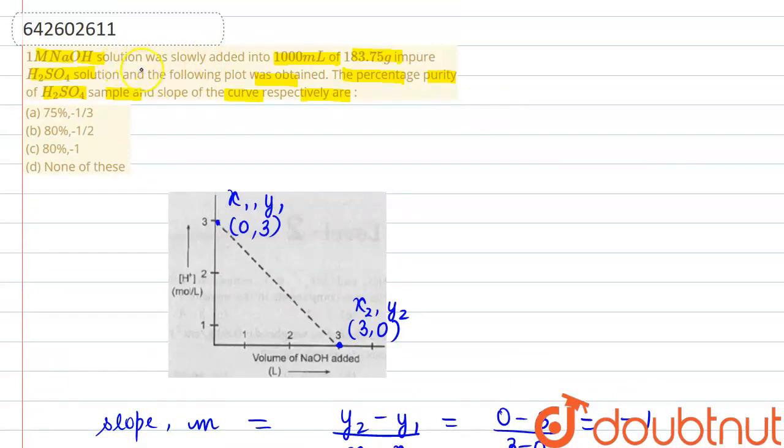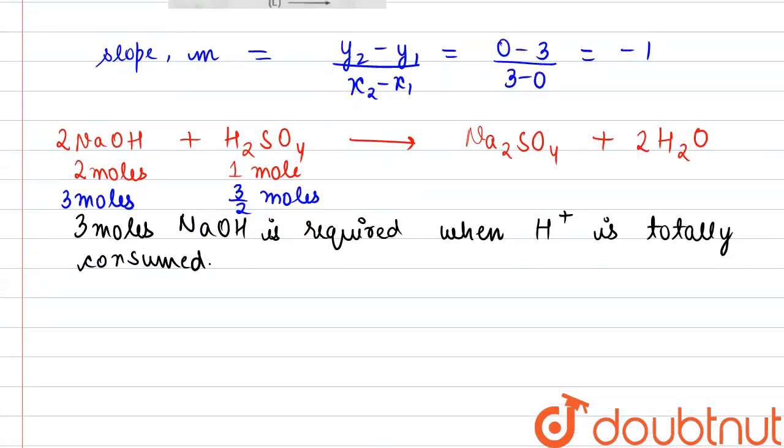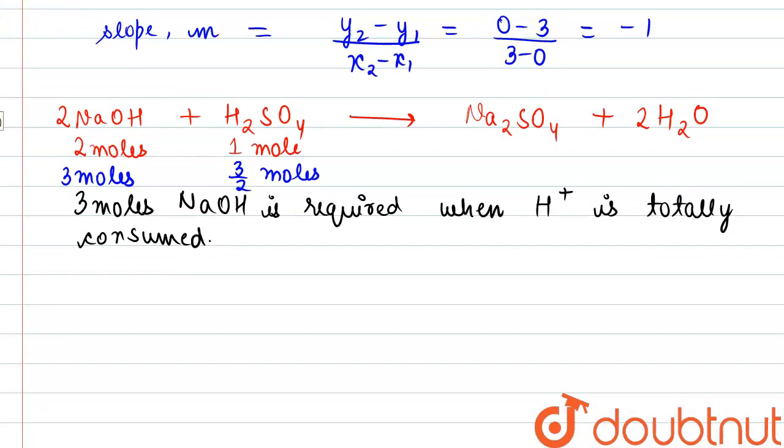...it is provided that one molar of NaOH solution was slowly added into 1000 ml of 183.75 gram impure sulfuric acid. So from this stoichiometry of the reaction we can say that...